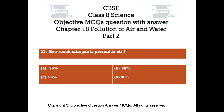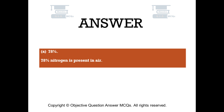Question number 13. How much nitrogen is present in air? Option A: 78%. Option B: 68%. Option C: 58%. Option D: 48%. The right answer is Option A — 78%. 78% nitrogen is present in air.